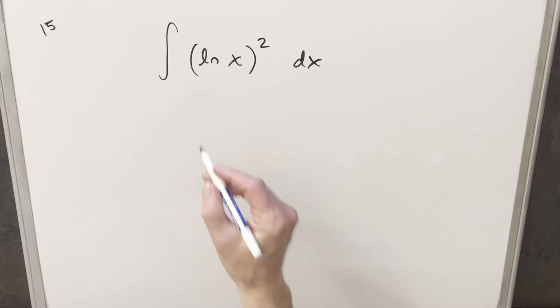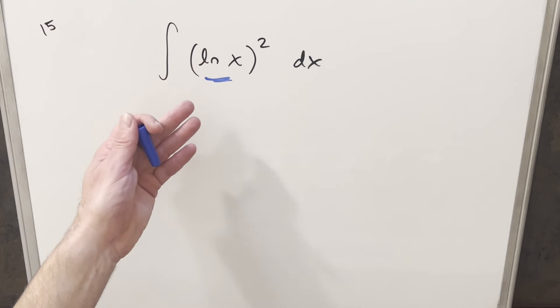Okay, to get started with this, when we have natural log in an integral, there's only a few things typically we want to try. The most common way I like to handle this is integration by parts. Sometimes we do a u-substitution, but there's nothing really to substitute with because there's nothing else in the integral.